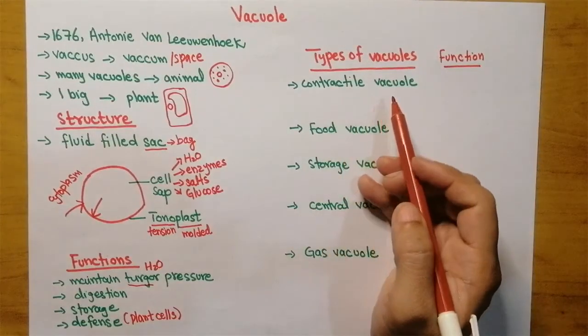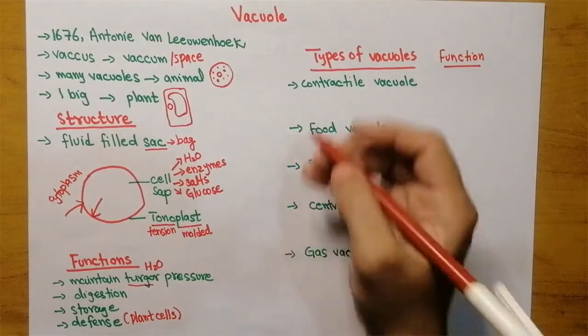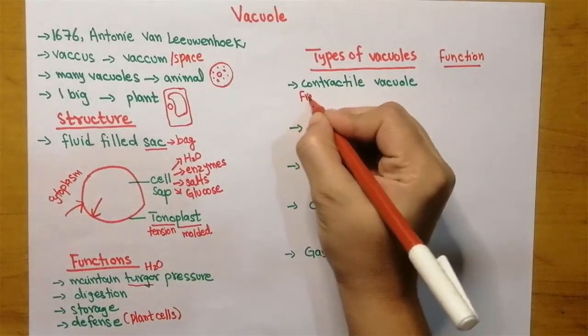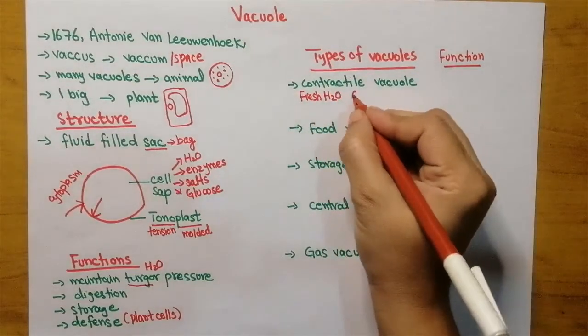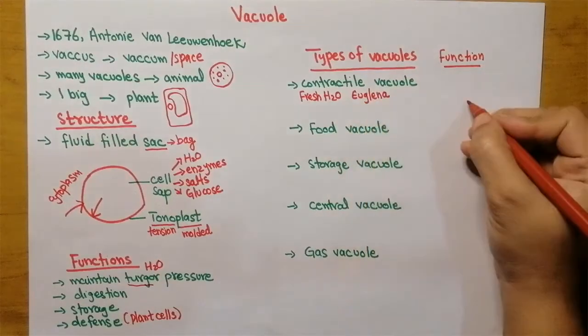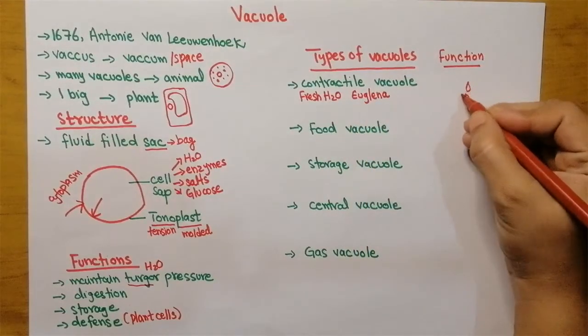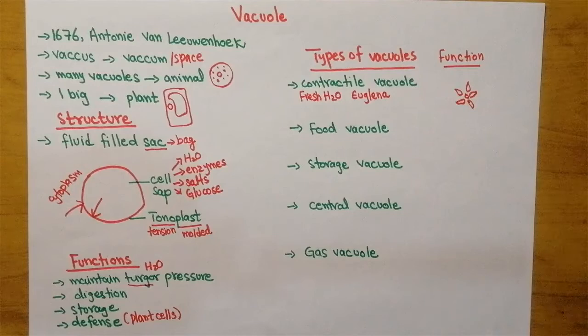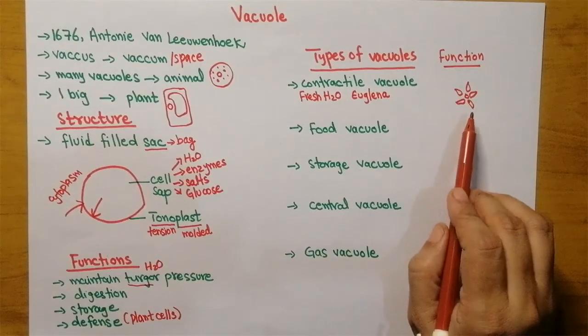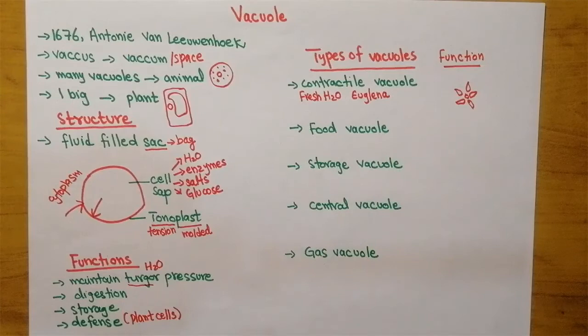Contractile vacuole is actually present in freshwater organisms, for example Euglena. Most of the time in the Euglena diagram, the contractile vacuole is presented. The purpose of contractile vacuole is to maintain turgor pressure and maintain the isotonic environment.